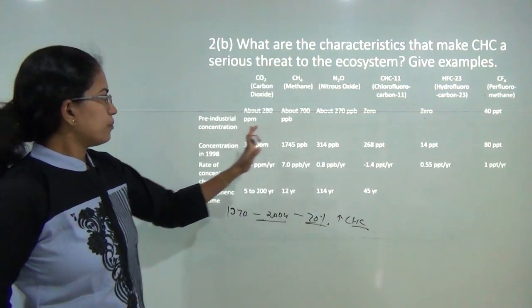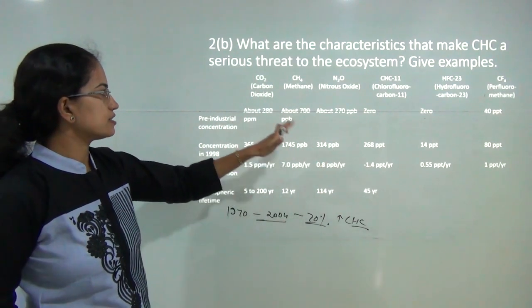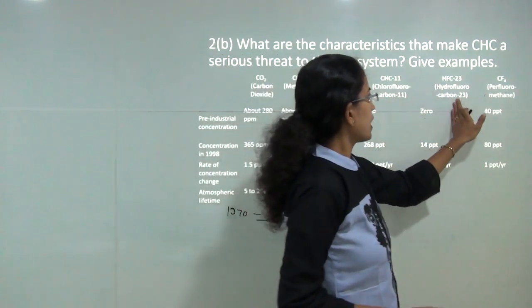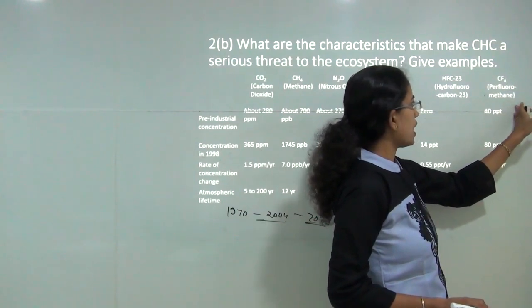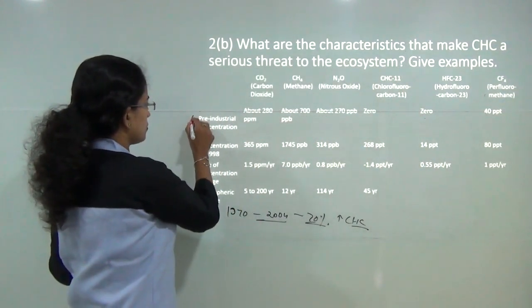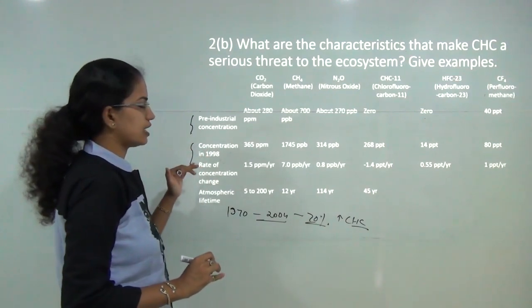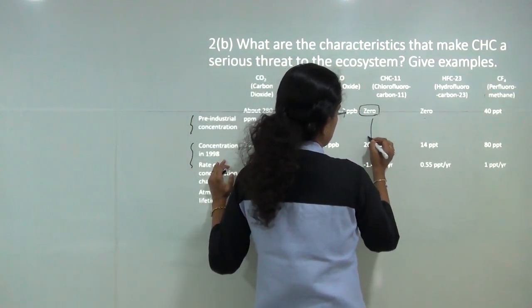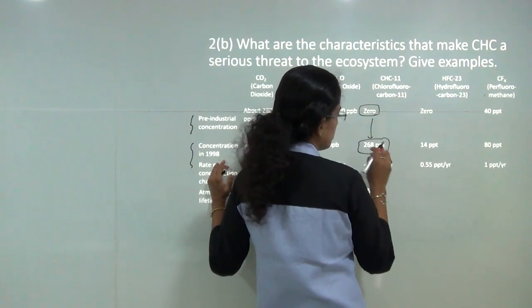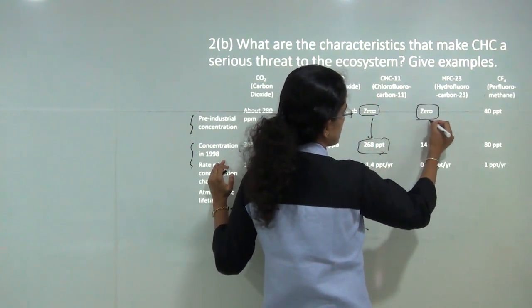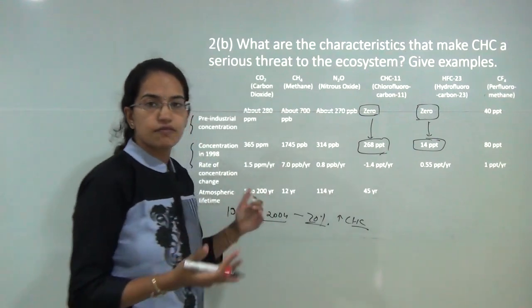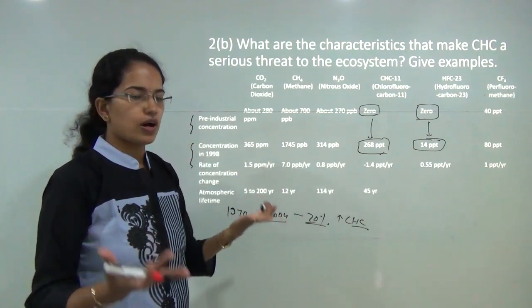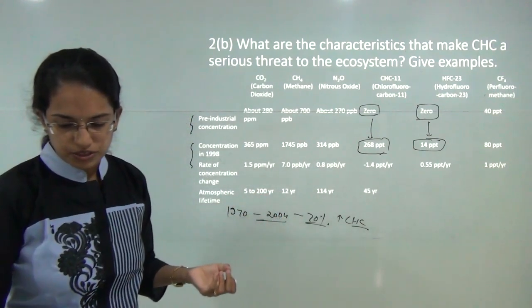A diagram shows the amounts of various gases: carbon dioxide, methane, nitrous oxide, chlorofluorocarbon-11, hydrofluorocarbon-23, and perfluoromethane. Comparing pre-industrial and 1998 concentrations, CFC consumption increased from 0 to 268 and HFC from 0 to 14, showing a significant increase that has led to disruption and instability in the atmospheric system.